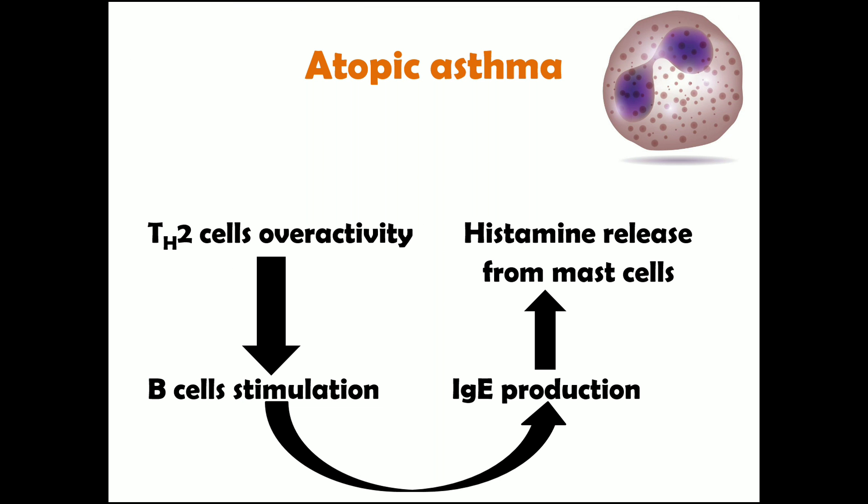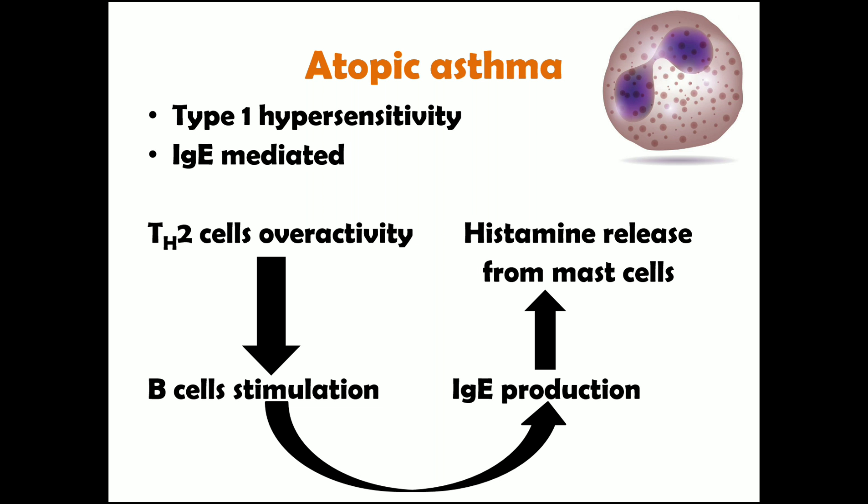Now let's talk about the pathogenesis of atopic asthma. First of all, it is a type 1 hypersensitivity reaction, mediated by IgE. In asthma there is an increase in the eosinophil count in the peripheral blood of patients. When a patient with atopic asthma comes into contact with a trigger — for example cold, dust, or animal hair — there will be over-activity of TH2 cells.